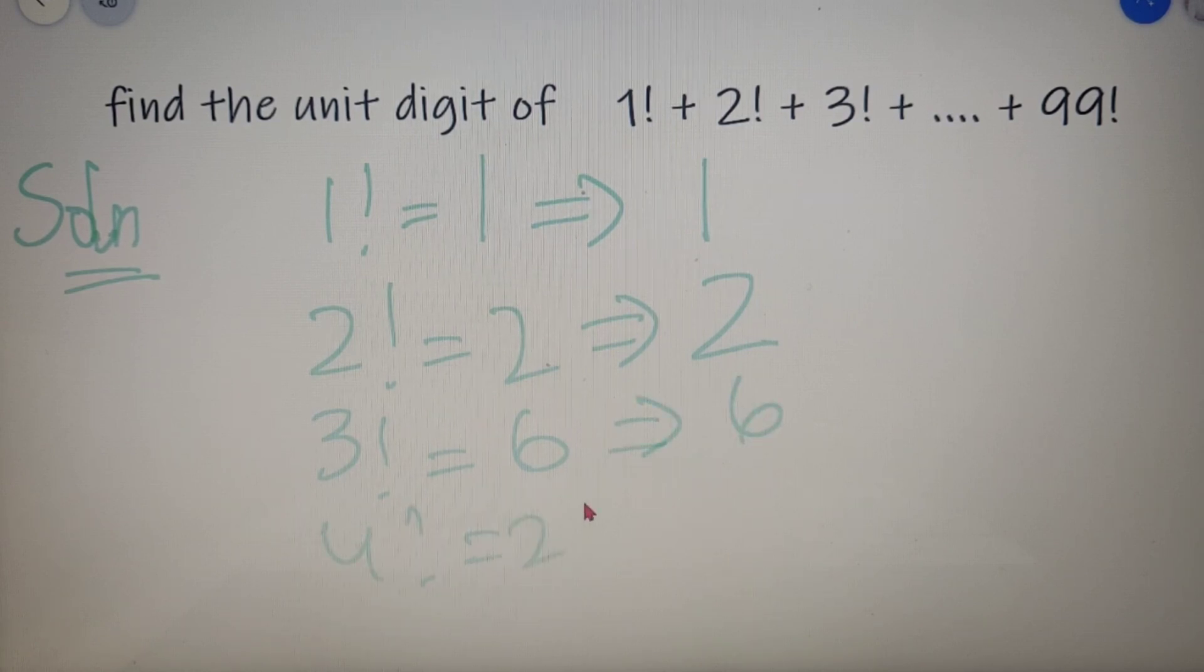4 factorial is equal to 24, which implies the unit digit is 4. And 5 factorial is equal to 120, which implies the unit digit is 0.